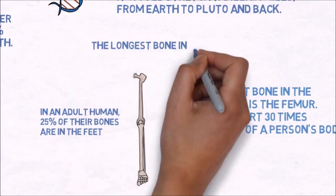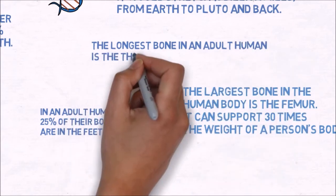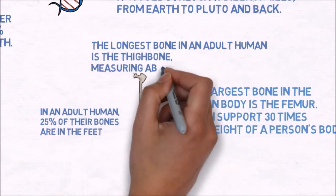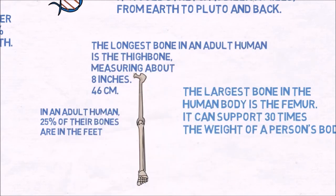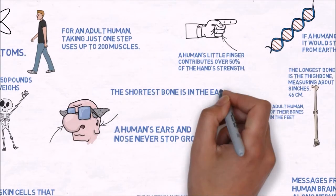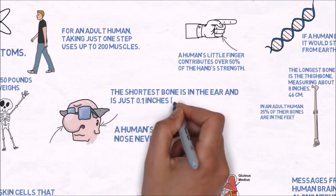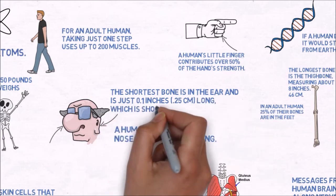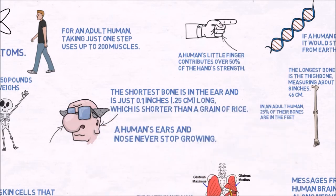The longest bone in an adult human is the thigh bone, measuring about 18 inches. The shortest bone is in the ear and is just 0.1 inches long, which is shorter than a grain of rice.